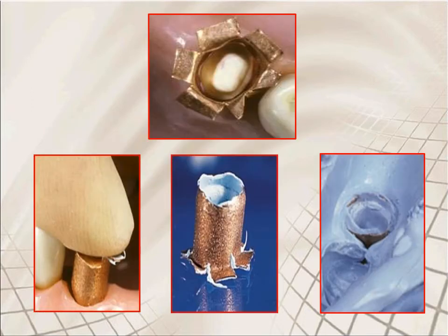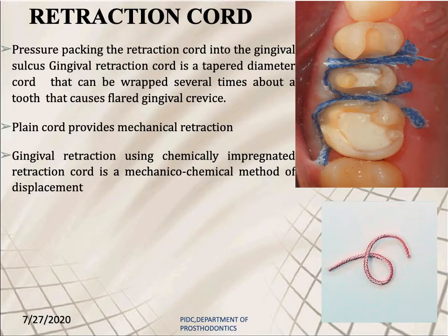After positioning the copper band, the prepared tooth is filled with modeling compound and the impression is made. Regarding retraction cord, this involves pressure-packing the retraction cord into the gingival sulcus. The gingival retraction cord is tapered in diameter and can be wrapped several times about a tooth, causing a flat gingival crevice. The plain cord provides mechanical retraction, while chemically impregnated retraction cord represents the mechanico-chemical method of gingival displacement.